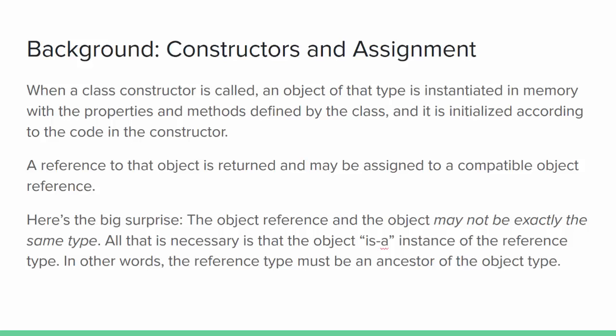When a class constructor is called, an object of that type is instantiated in memory with the properties and methods defined in the class, and it's initialized according to the code in the constructor you used. The location of that object in memory is returned and usually assigned to a compatible object reference.